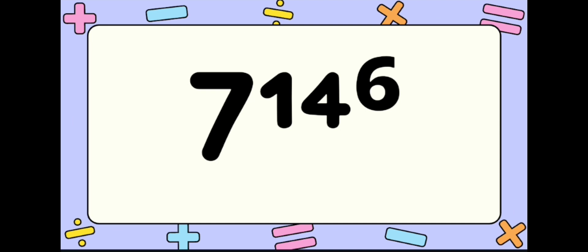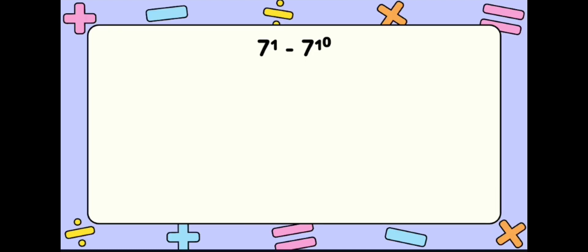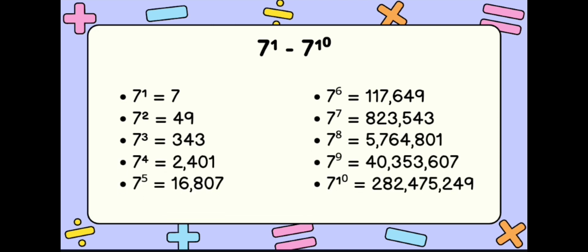Our given is 7 raised to 146. To find its unit's digit, we need to compute 7 raised to 1 through 7 raised to 10. So: 7^1 = 7, 7^2 = 49, 7^3 = 343, 7^4 = 2,401, 7^5 = 16,807, 7^6 = 117,649, 7^7 = 823,543, 7^8 = 5,764,801, 7^9 = 40,353,607, and 7^10 = 282,475,249.